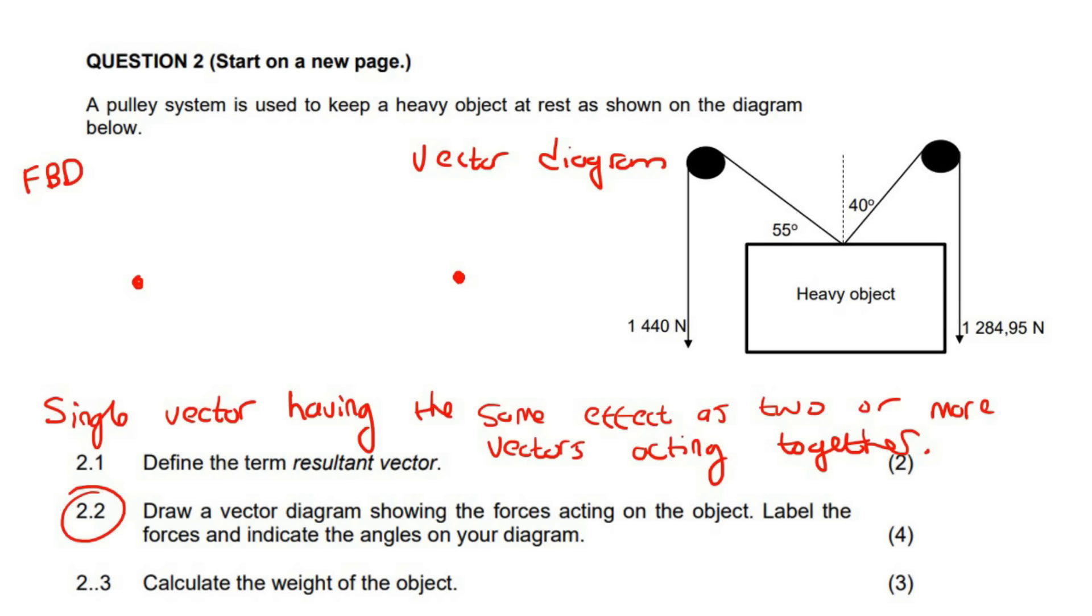So free body diagram. We've got to just look at the different forces here. There is a heavy object that is going to pull down. So we can say that there's a heavy object pulling down. This rope, all you do is you just take that part away. Like what is this rope doing to this object? Well, it's pulling the object that way. Don't worry about this part that's going down. We can ignore that. So we can just say that there is a force going that way, which is 1,440 newtons. And then there's this one over here, which is just going at its own angle, which is 1,284.95 newtons. So that is a free body diagram, but that's not what they're asking us to do.